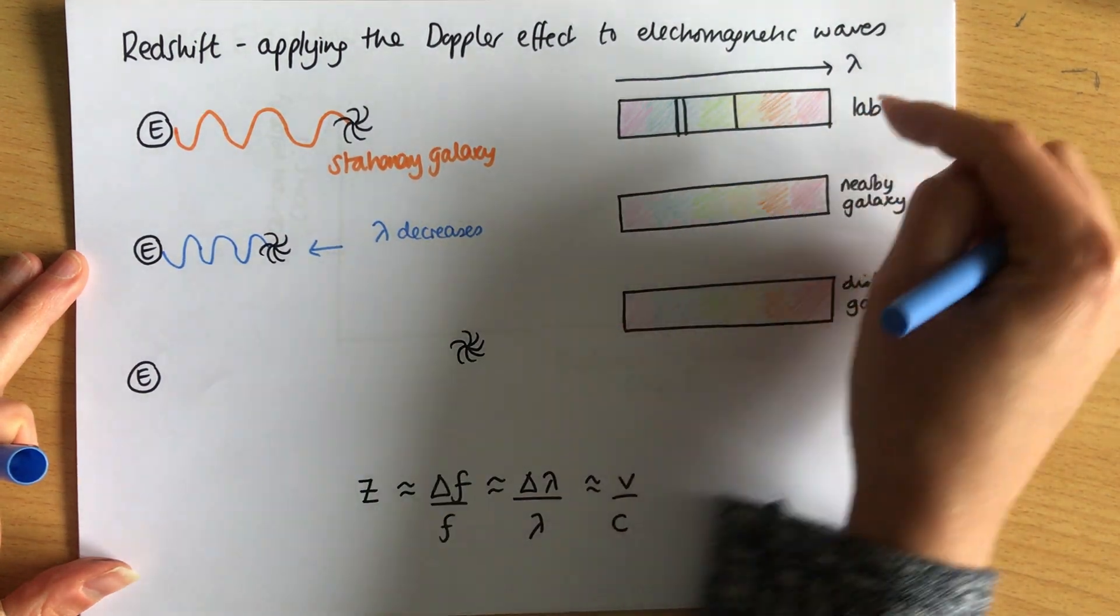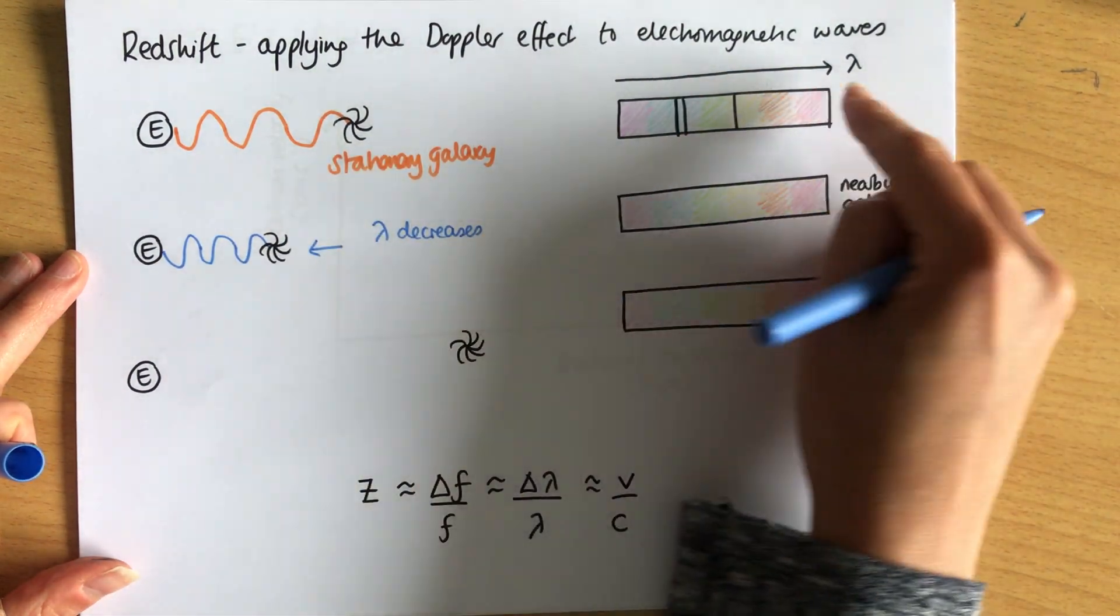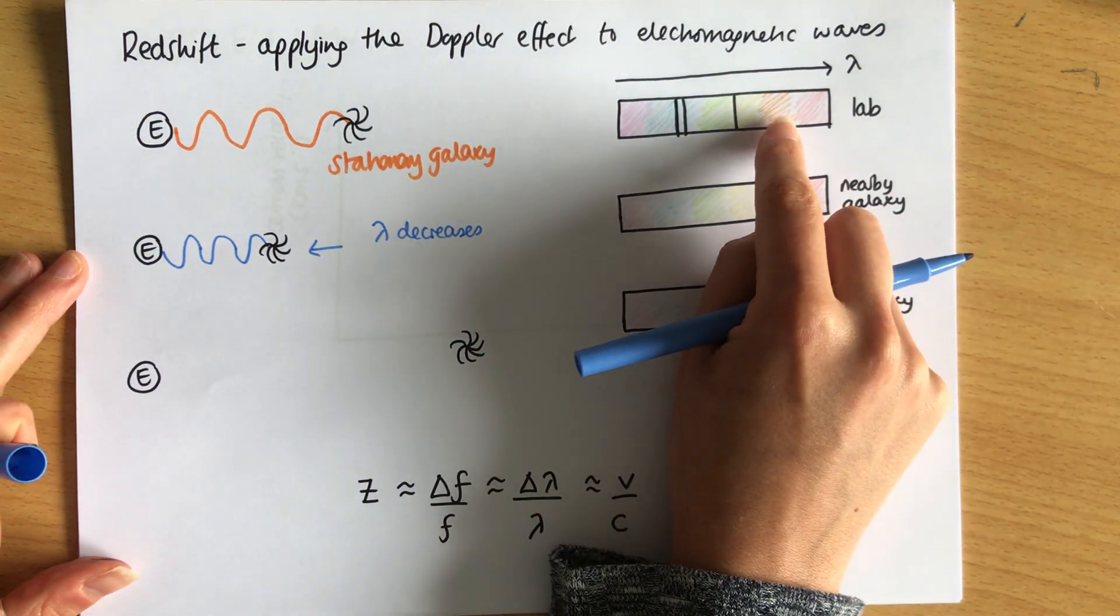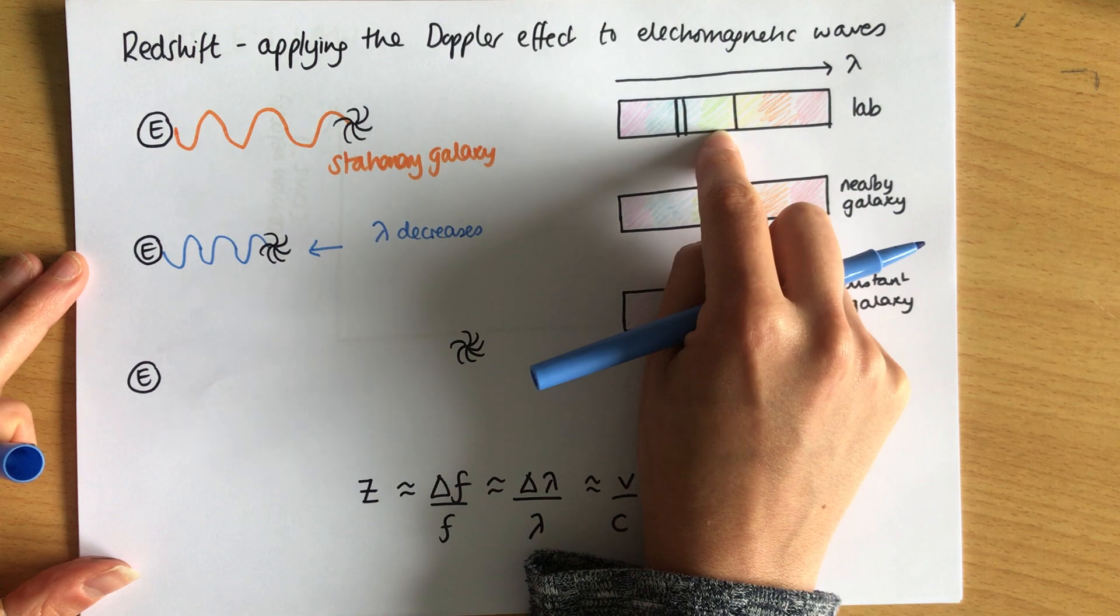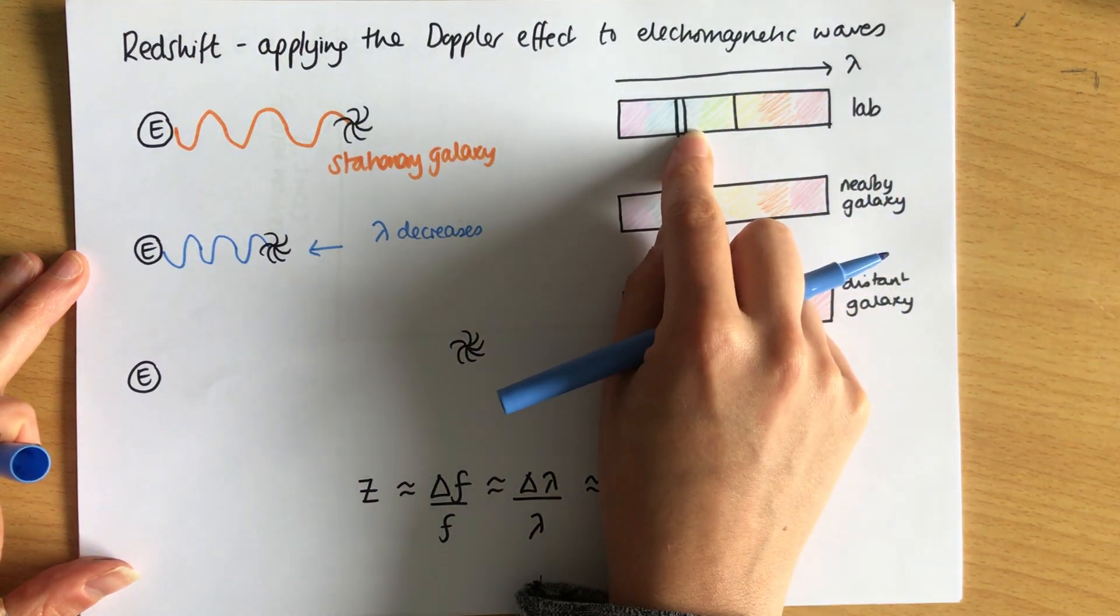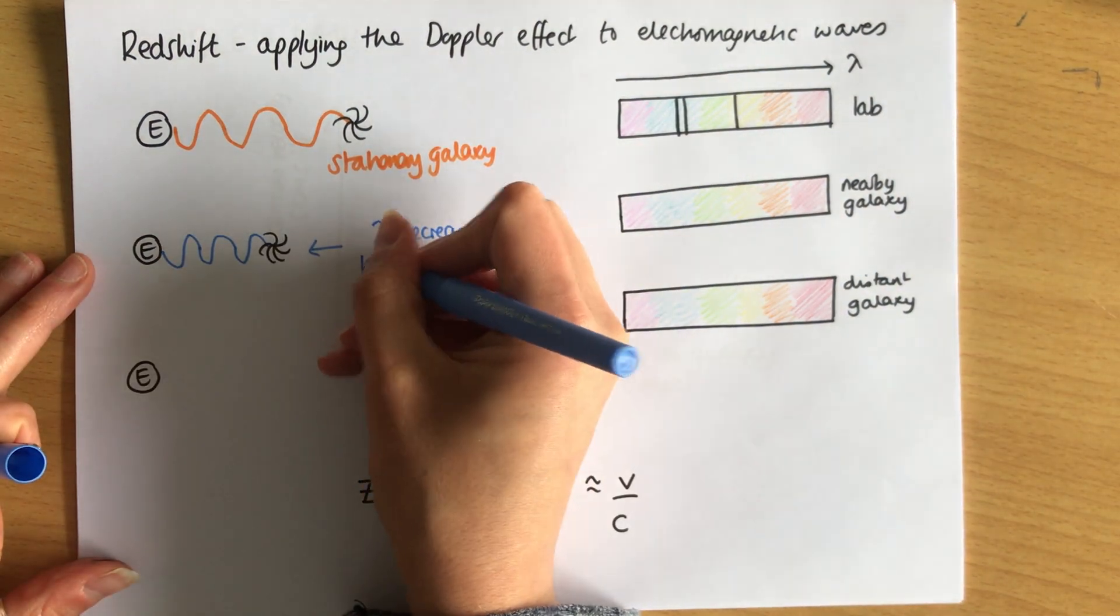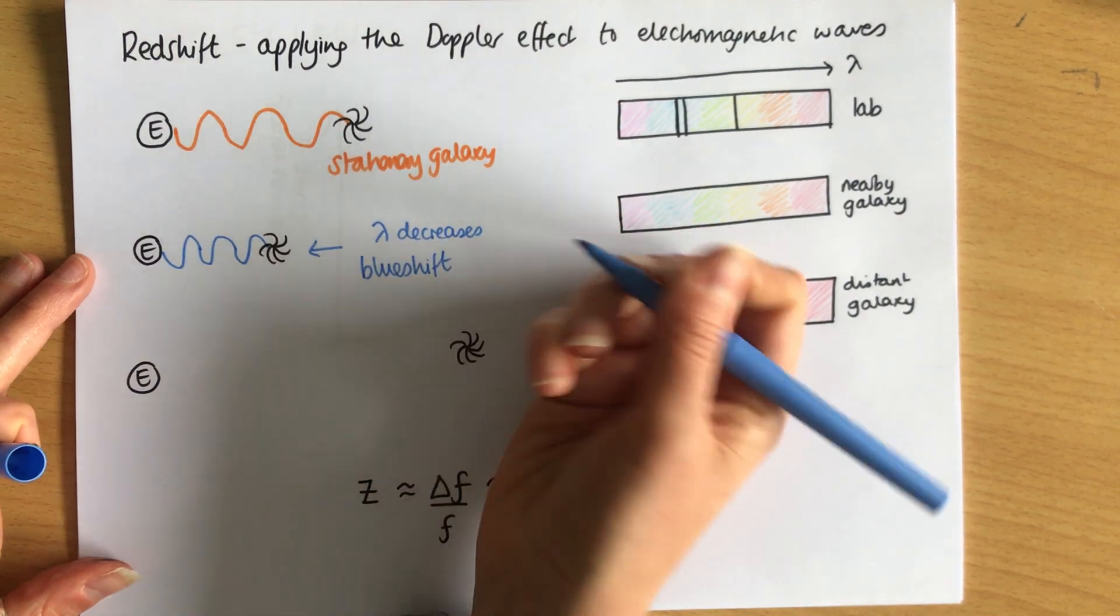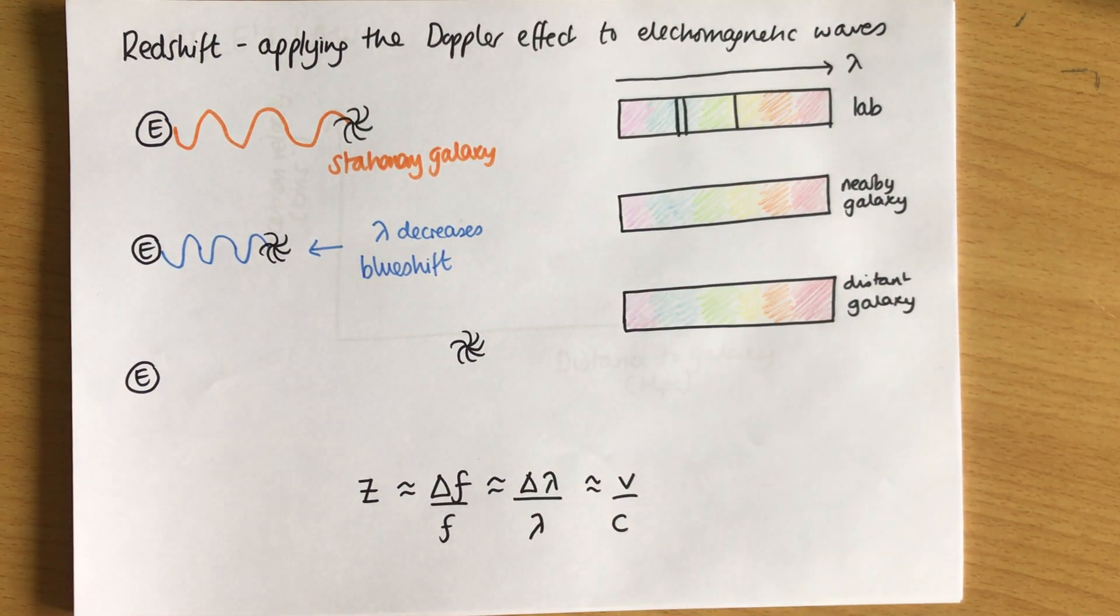Now, when the wavelength of light decreases, it goes along this way on the spectrum. This is increasing wavelength. So red light would become orange. Orange light would become yellow. Yellow light would become green. Green light would become blue. And so on. What we say is that the wave is shifted to the blue end of the spectrum. And we call this blue shift. When a galaxy is moving towards us, the wave of light is blue shifted. Now, it doesn't mean the galaxy looks blue. A blue galaxy would then be blue shifted further and would look more purple. But it will shift towards that blue end.